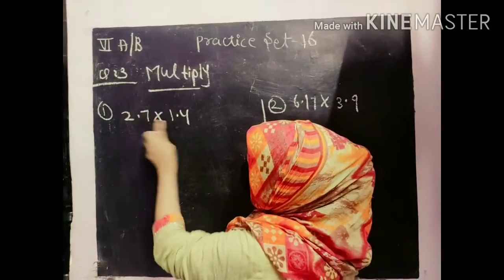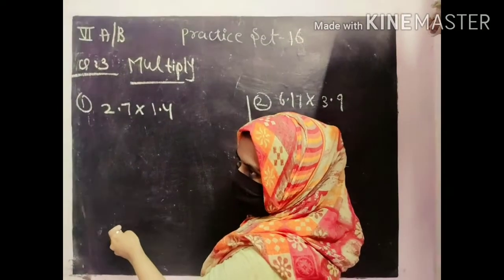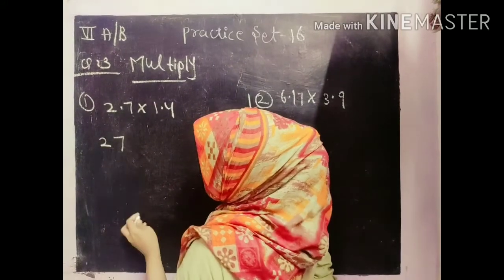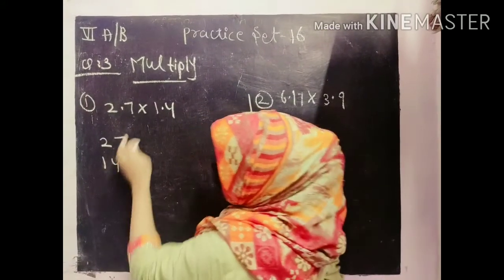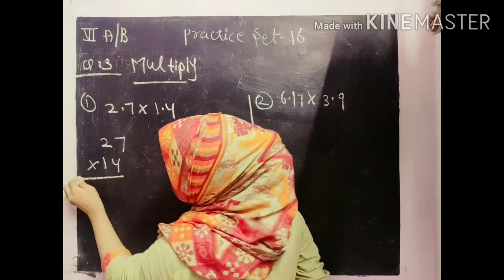Here I am giving you 2 examples. What can we do? Without using decimal form, first multiply it, then after that put the point. Just for example I am giving you 2, 27 and 14. I have removed the points. Now what am I doing? Multiplying.